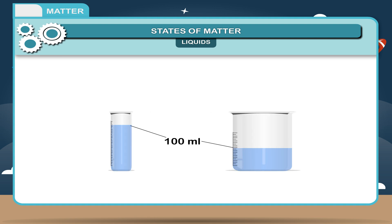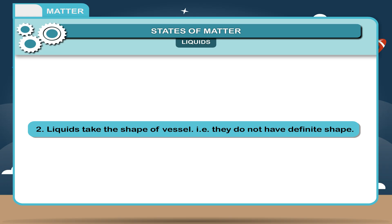Result: Liquids do not change their volume. 2. Liquids take the shape of the vessel. That is, they do not have a definite shape.